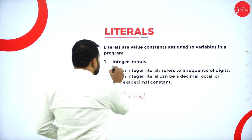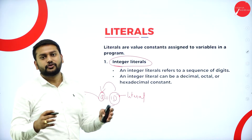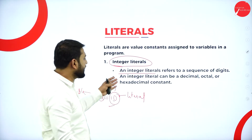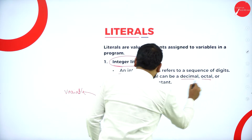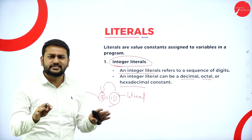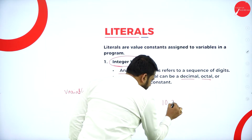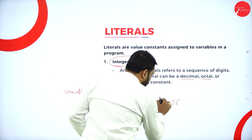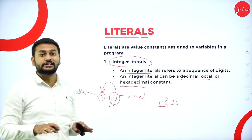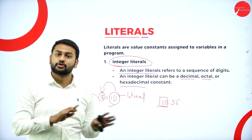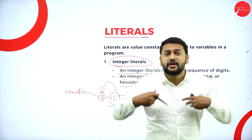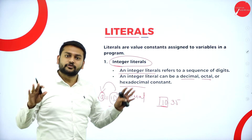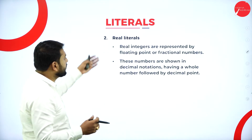The first one is integer literal. An integer literal refers to a sequence of digits — it can be a decimal, octal, or hexadecimal constant. To keep it simple, any combination of zero to nine is what I will call an integer literal.